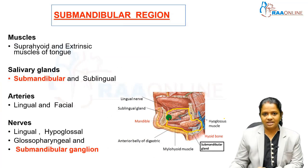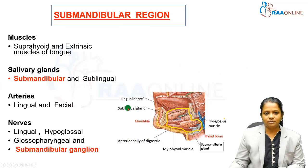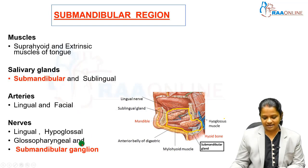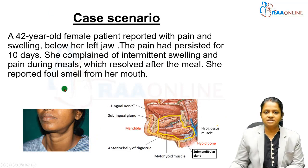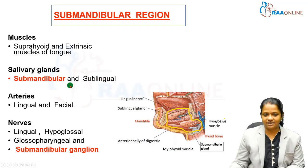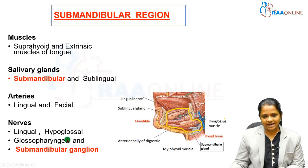The structures of the submandibular region include the suprahyoid muscles and extrinsic muscles of the tongue, the submandibular and sublingual salivary glands, the lingual and facial arteries, and the lingual, hypoglossal, and glossopharyngeal nerves along with the submandibular ganglia. In this case, since the swelling persisted during meals and resolved after eating, the structure involved is a salivary gland.